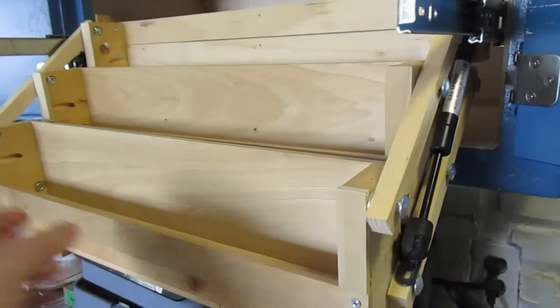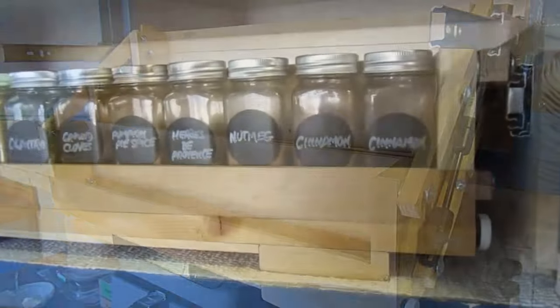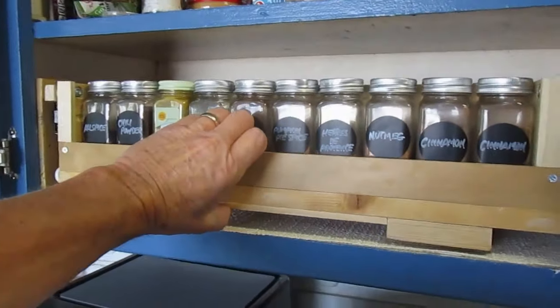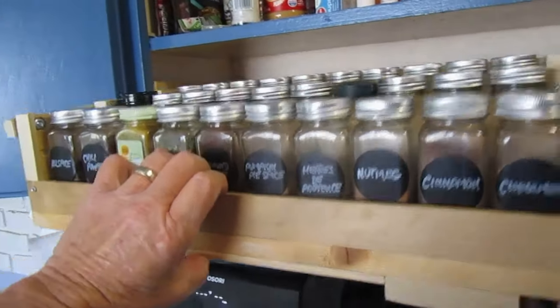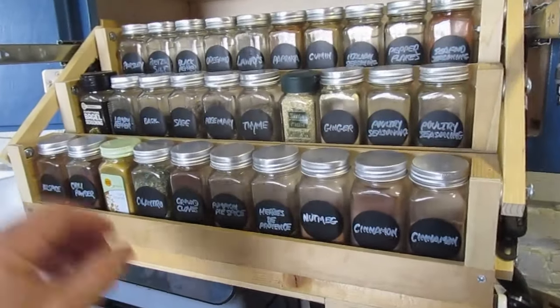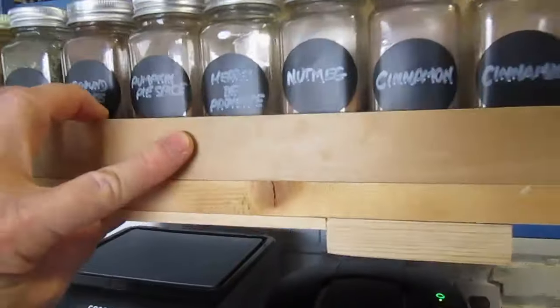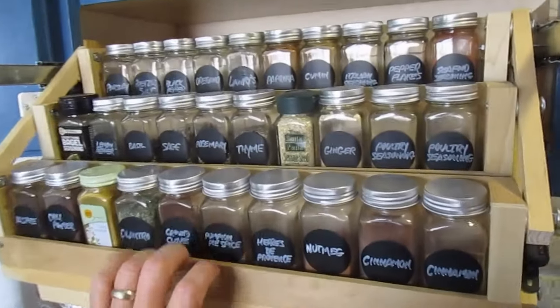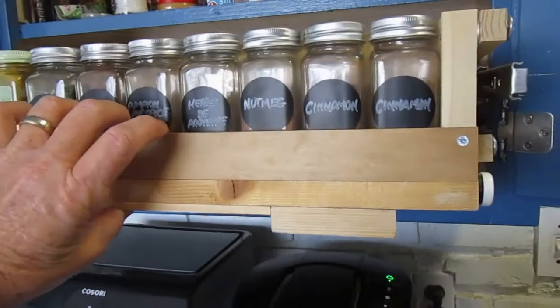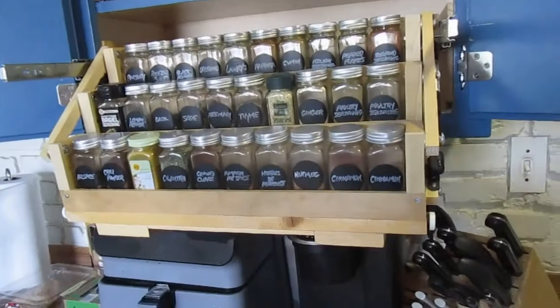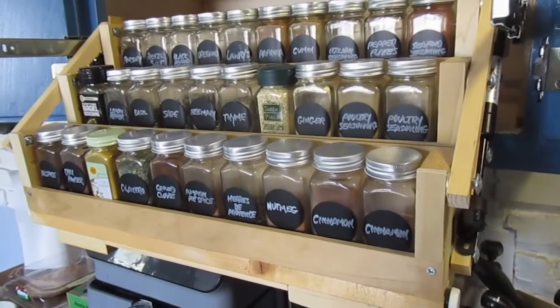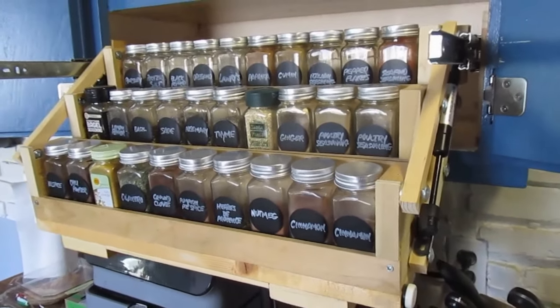The extension dampers provide enough resistance to prevent even the fully loaded rack from collapsing like a rock, like I said before. You can pretty much one-hand this whole assembly. I mean, you can slide it out and just let go and slide it back in, so you can literally access 30, that's right 30, spice jars with just one hand.